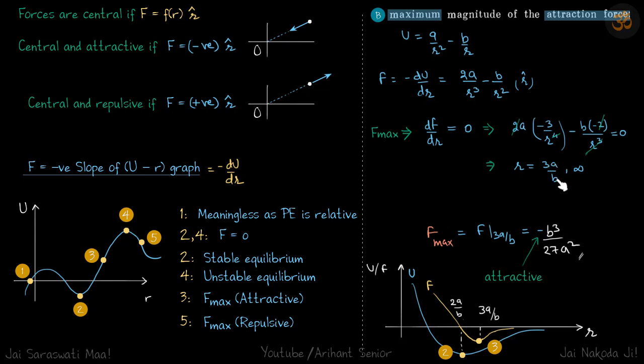R reaches either a maximum or minimum at 3A by B. We put this value in the force to get more information. When we put that here, we see the force at this particular value comes to be negative, and if force is negative, force is attractive.